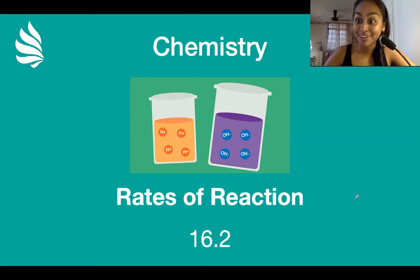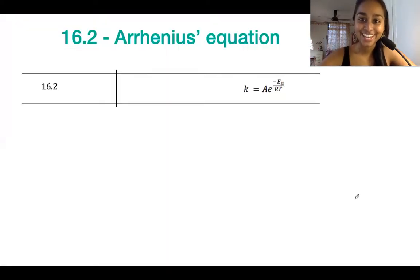So this topic primarily concerns Arrhenius' equation. So this over here is Arrhenius' equation, it's found in your data booklet in section 1, so that's the screenshot I've taken over there.